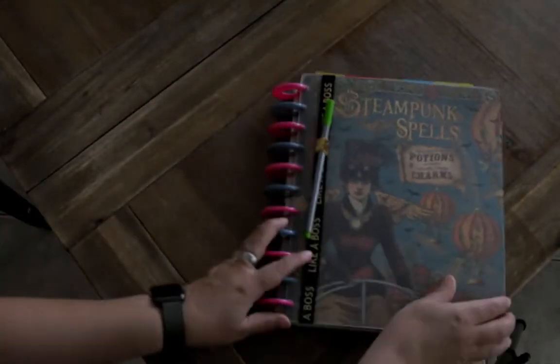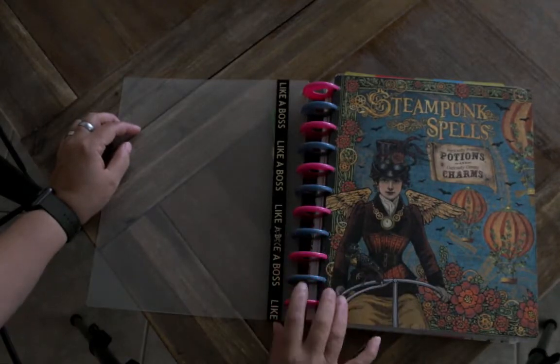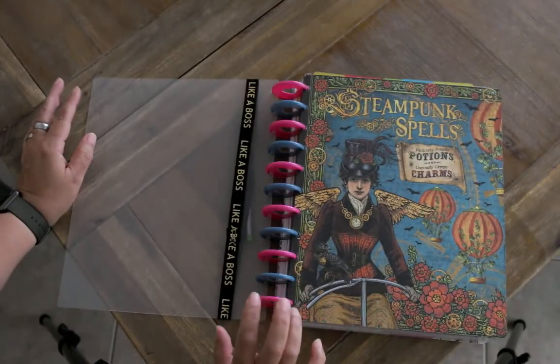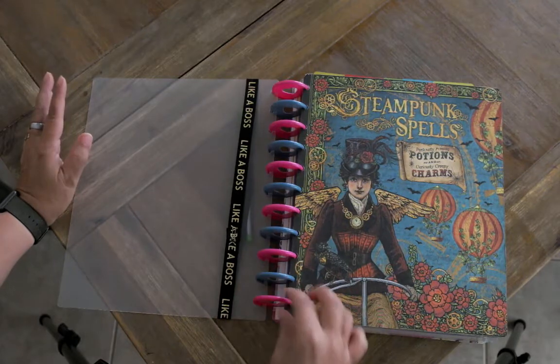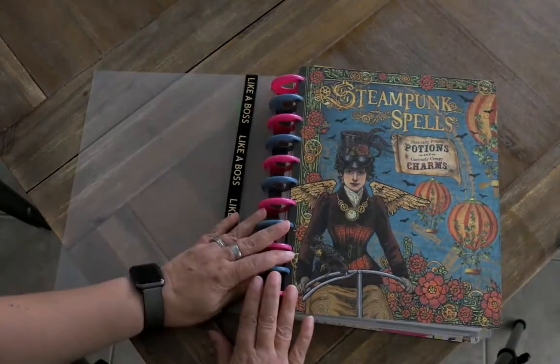These are actually for a different kind of planner, the Me and My Big Ideas planner, but all the rings are interchangeable. You can tell because they have little hearts inside instead of being the plain Staples kind. And this is just a piece of paper that I glued on to the front of a regular Staples thing.